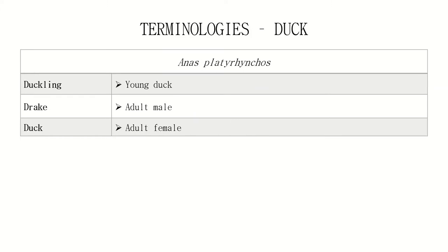Next is duck. The scientific name of duck is Anas platyrhynchos. The duckling is, of course, the young duck. The drake is the adult male, and duck is the adult female.